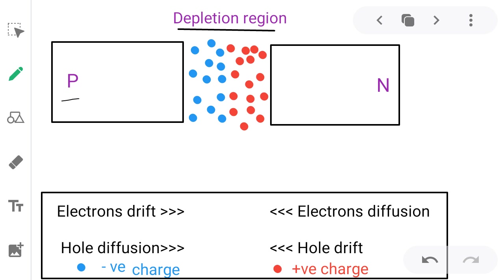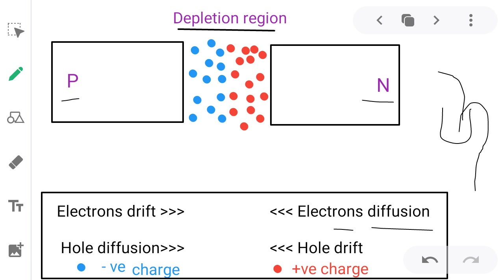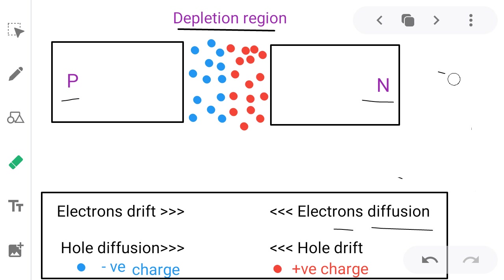P means P type semiconductor — holes are majority charge carriers. N means N type — electrons are the majority charge carriers. In this formation, basically two processes take place: one is diffusion and the other is drift. Diffusion is simply the overflow — at the N side, electron concentration is more; at the P side, hole concentration is more. Electrons flow from N to P and holes flow from P to N.